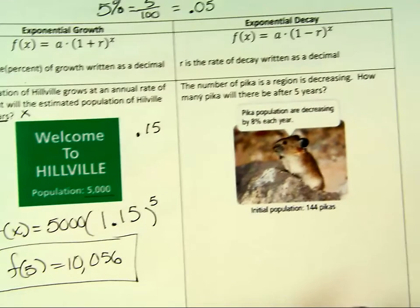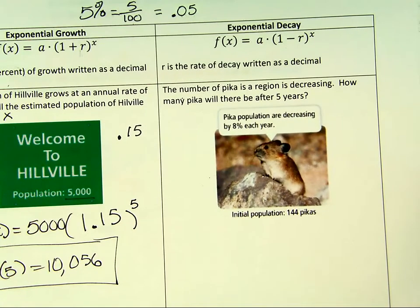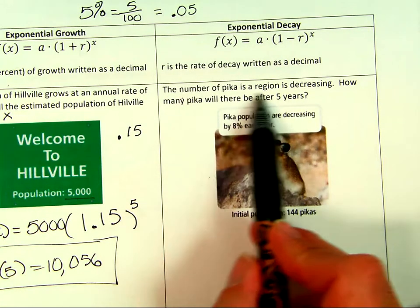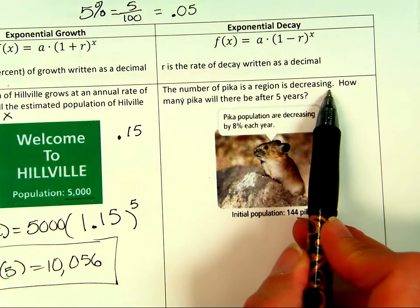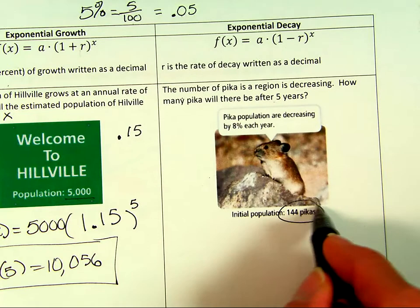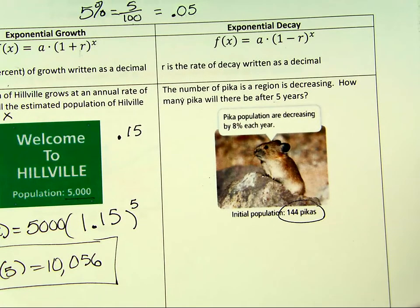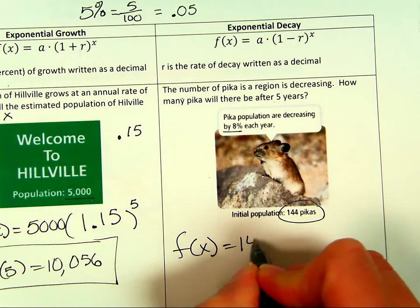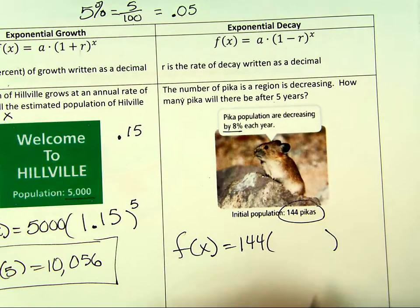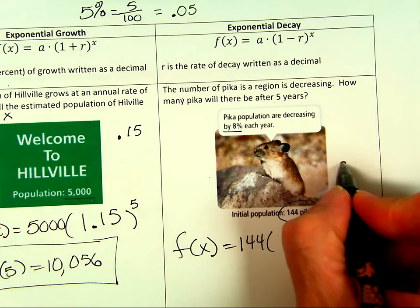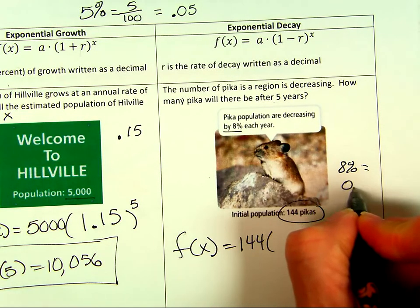We're going to talk about a decrease in population now. This little mouse, I'm guessing that's how you say it, pica. The number in the region is decreasing. After five years, how many will be left? The initial population is 144. My decreasing percent or rate is 8%. I'm going to put my initial value first, 144.